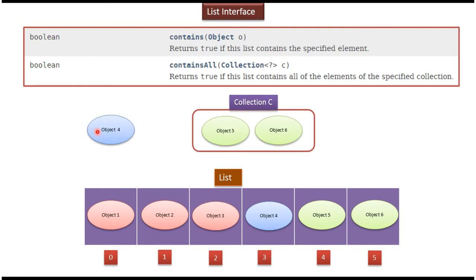Suppose I want to check whether Object 4 is present in the list or not. I can pass Object 4 to the contains() method — it will return true if present, false if not. If I want to check a group of objects, I put them in a collection C (e.g., Object 5 and Object 6) and call the containsAll() method, which returns true if all objects are present, else false.